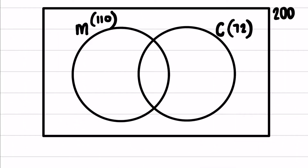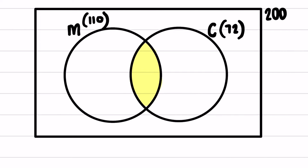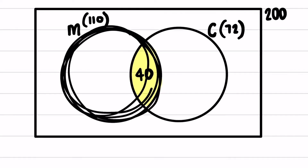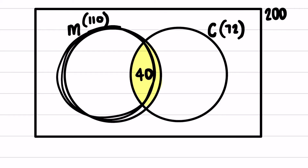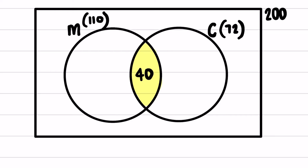We always start in the intersection. We know that 40 people like milk and cream, so we put those 40 people straight into the center. Now if I want to fill in the rest — in the milk circle I need 110 people, but 40 are already in the intersection. So to get the remaining: 110 minus 40 gives me 70 people in the milk-only region.